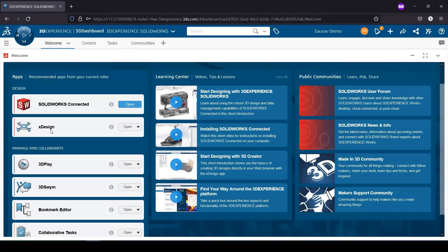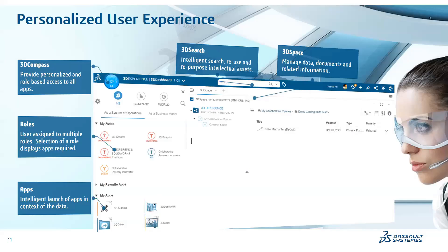Let's look at the user experience and user interface. On the top left corner you'll see a circular shape resembling a coordinate system, which we call the 3D Compass. The 3D Compass provides access to the complete roles, solution portfolio, and apps entitled to you. Roles contain combinations of apps, all embedded inside the compass — you can hover around it, click on it, and get access. For example, the 3D Creator role contains the XDesign app used to create parametric 3D models. Similarly, we have XShape for organic modeling. We also have 3D Search to search all kinds of content on the platform.